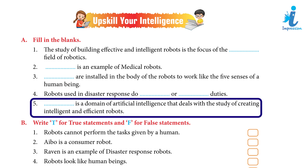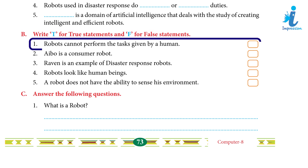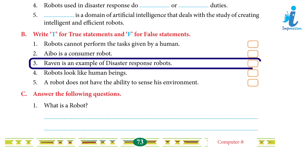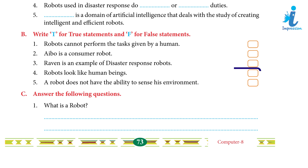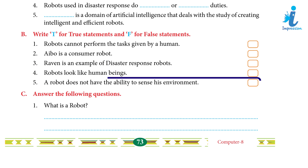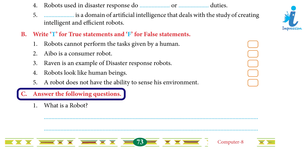5. Robotics is a domain of artificial intelligence that deals with the study of creating intelligent and efficient robots. True or False: 1. Robots cannot perform the task given by humans — False. 2. Aibo is a consumer robot — True. 3. Raven is an example of a disaster response robot — False. 4. Robots look like human beings — True. 5. A robot does not have the ability to sense its environment — False.